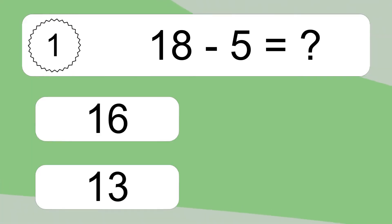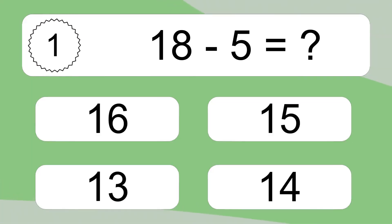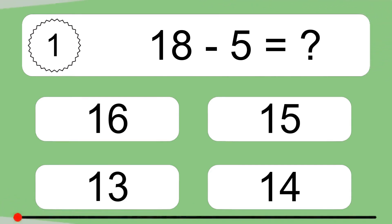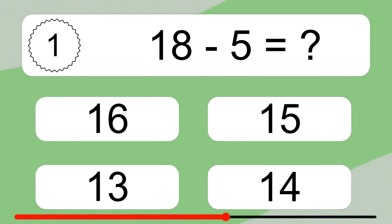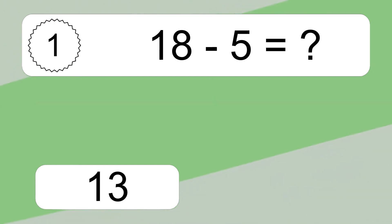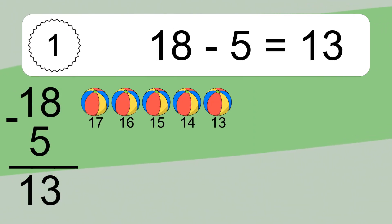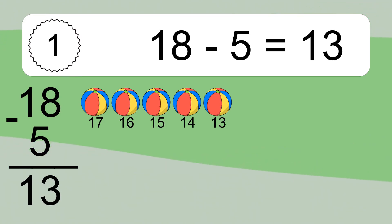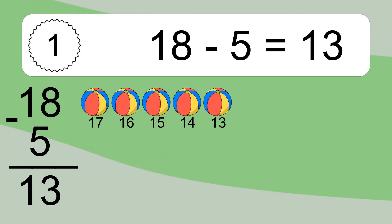18 minus 5 equals what? 18 minus 5 equals 13. Let's count it: 17, 16, 15, 14, 13.